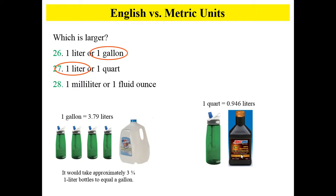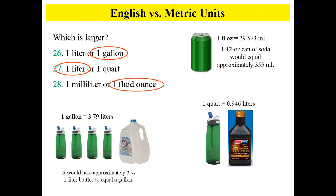And finally, one milliliter or one fluid ounce? One fluid ounce is larger than one milliliter. If you look at a can of soda, one 12-ounce can would equal about 355 milliliters — you can find that measurement on the can, where it shows the volume in milliliters.